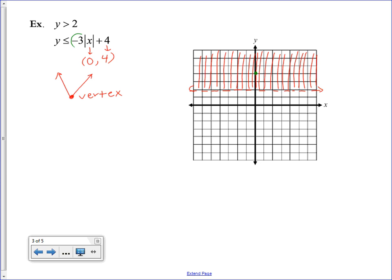And then this number, the negative 3 that's in front of the absolute value, acts as my slope. It tells me to go down 3 over 1 in both directions from my vertex to create this absolute value V-shape. I get to use a solid line now because this inequality has an equal sign underneath it. Solid line to connect.